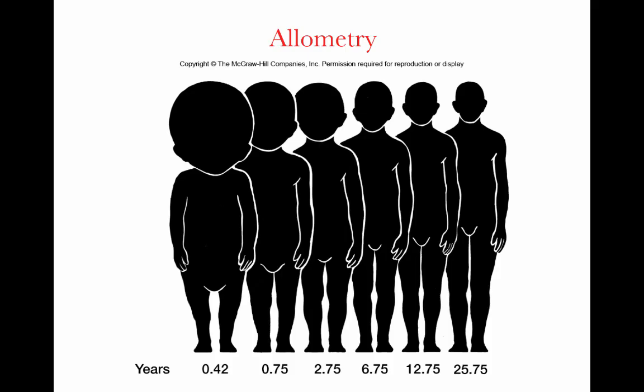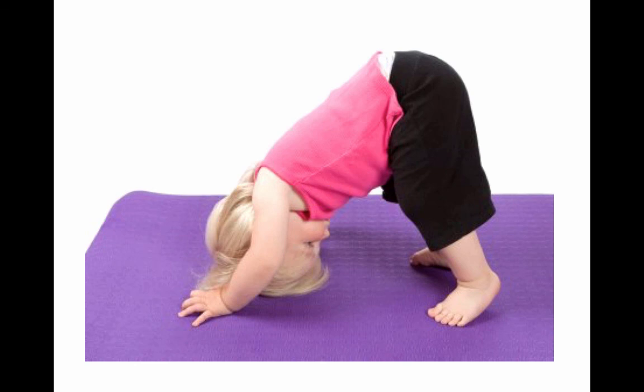We can think about this in terms of the development of an individual organism, such as this illustration of how body proportions change in humans from a baby all the way up to an adult. This accounts for the ability of toddlers to do what we call the head-assisted downward dog, with a very large head and short limbs — looking very different from an adult doing the same yoga posture.